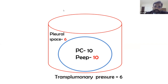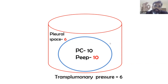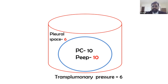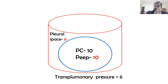Question from the audience: how do we determine pleural pressure clinically? There is no direct clinical way — it must be measured using an esophageal manometer, a device similar to an NG tube with three ports: a ryle's tube port, a gastric balloon, and an esophageal balloon. The esophageal balloon sits beside the pleura and approximates pleural pressure.